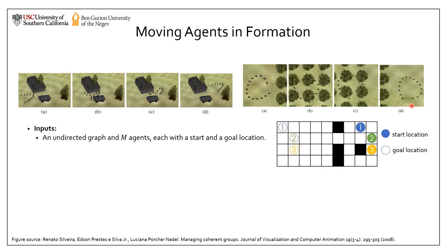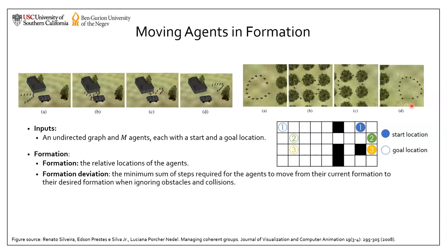To formally define the problem, we are given an undirected graph and a team of agents, each with a start and a goal location. We define the formation as the relative locations of the agents. We define the formation deviation as the minimum sum of steps required for the agents to move from their current formation to their desired formation when ignoring obstacles and collisions.